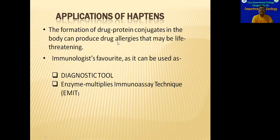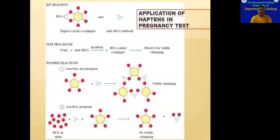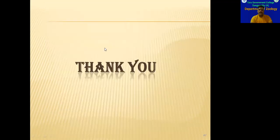In the case of drug allergy, we have to do a lot of work. In the case of diagnostic work, we use diagnostics. We use the Enzyme Multiplied Immunoassay Technique, or EMIT. In the case of drug allergy, we work after pregnancy tests. In that medicine, we also carry out research. We use this in the case of a vaccine. So, we have completed the career of the hapten. This is how the hapten is connected.